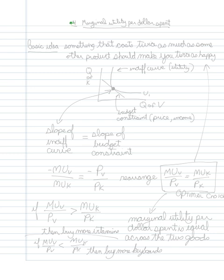Okay. So now we want to quantify the optimal choice. So here we're now looking at this rule called the marginal utility per dollar spent.